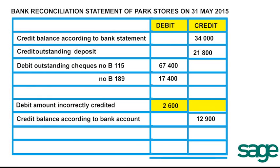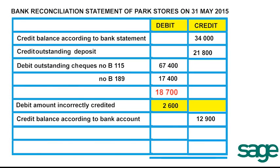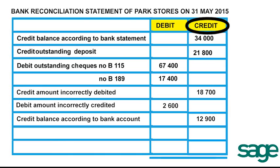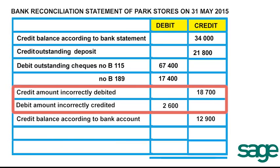We are also told that a stop order signed by Parkey Stores for R18,700 in respect of rental was incorrectly deducted on our bank statement. Again, we are Park Stores, not Parkey Stores. Because it was deducted, the bank entered it as a debit. To cancel it, we will credit it. So the R2,600 is taken out of the account as it was previously added, and the R18,700 is added back as it was previously taken out — we credit the amount incorrectly debited and debit the amount that was incorrectly credited.